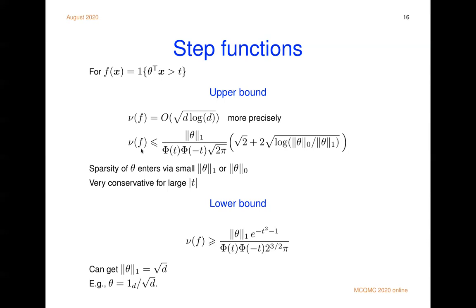With a bit more effort, we get a lower bound. So the mean dimension, it's at least the L1 norm of theta times some things. Well, the L1 norm of theta could be square root of d or it could be much smaller. So it's stuck between square root of d and square root of d log d.